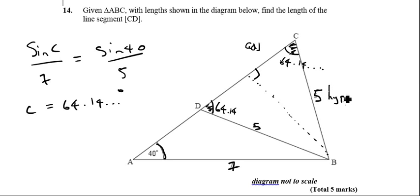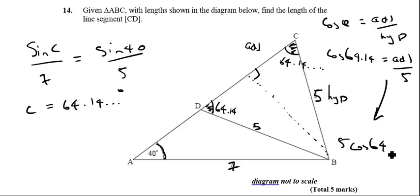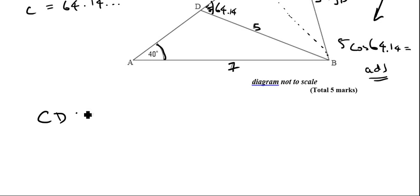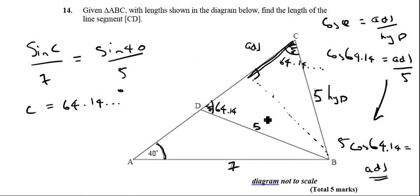So I've got adjacent and hypotenuse, so I'm going to use cos theta equals adjacent over hypotenuse. Therefore cos 64.14 is equal to adjacent over 5. Therefore, 5 cos 64.14 equals this adjacent bit here. And then all I need to remember is to times that answer by 2. And if I do that, I'm going to get the length of CD is equal to 4.36. And again, there's all sorts of different ways of doing that. That is probably the quickest way to do it.